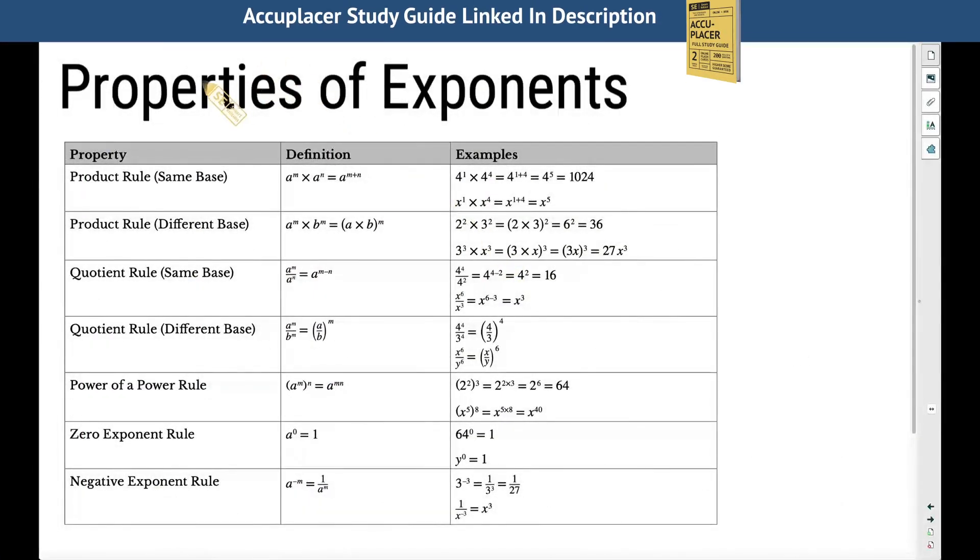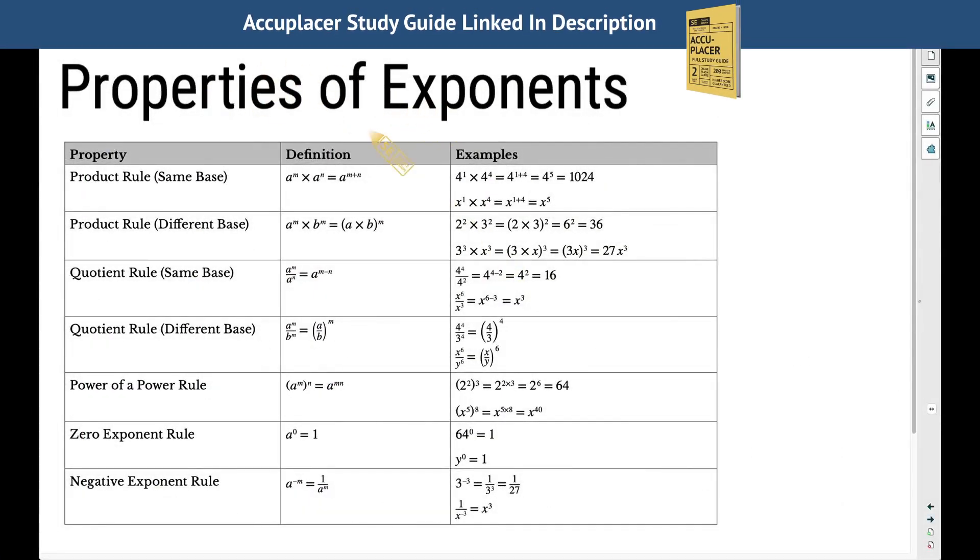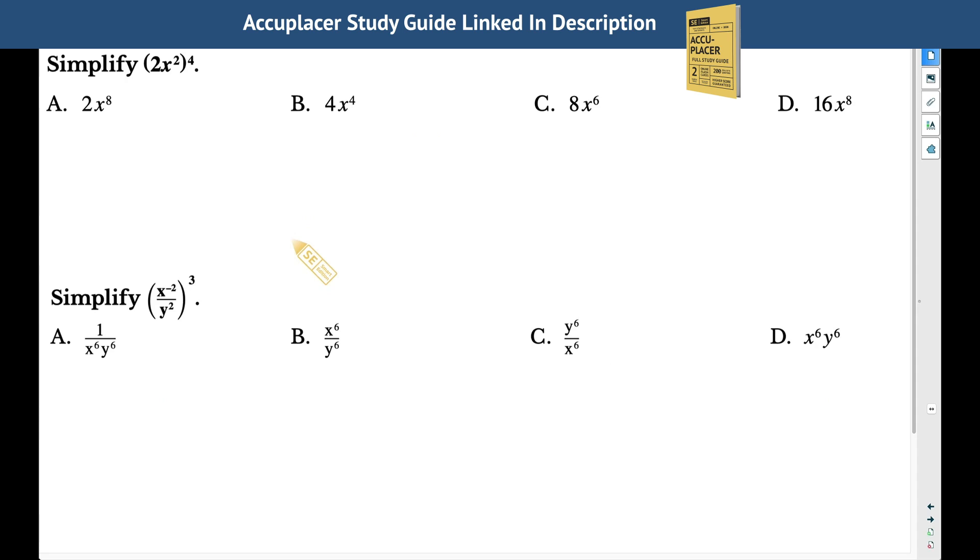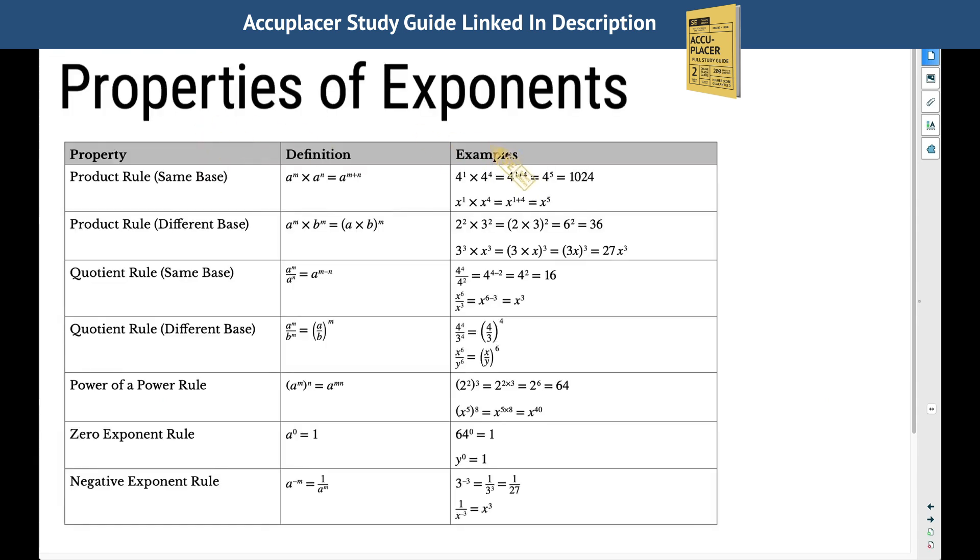In this video, we're going to look at a few properties of exponents. We actually have all of the properties here. Once we look at a few of these, we will do two examples to finish this lesson off. We have a product rule where we have the same base, different base, a quotient rule for the same base and different base, power of a power rule, the zero exponent rule, and the negative exponent rule.